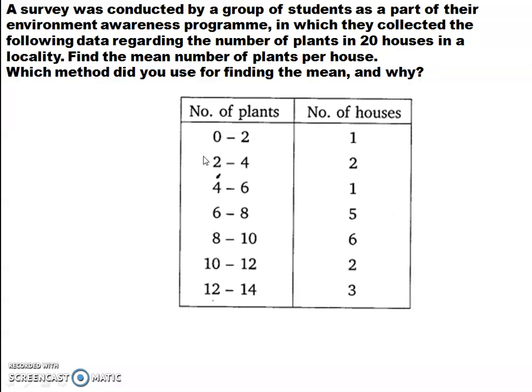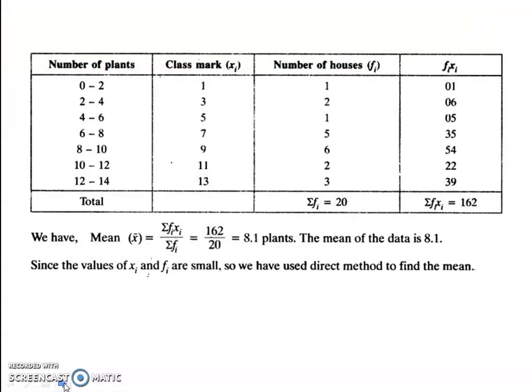So, the method you use is direct mean method and why? The data given to you is sufficiently small. Let's see the steps first. This is the table that you are going to draw for direct method. Direct mean method. This is the number of plants. Now, class mark. Do you remember the formula for class mark? Upper limit plus lower limit divided by 2.